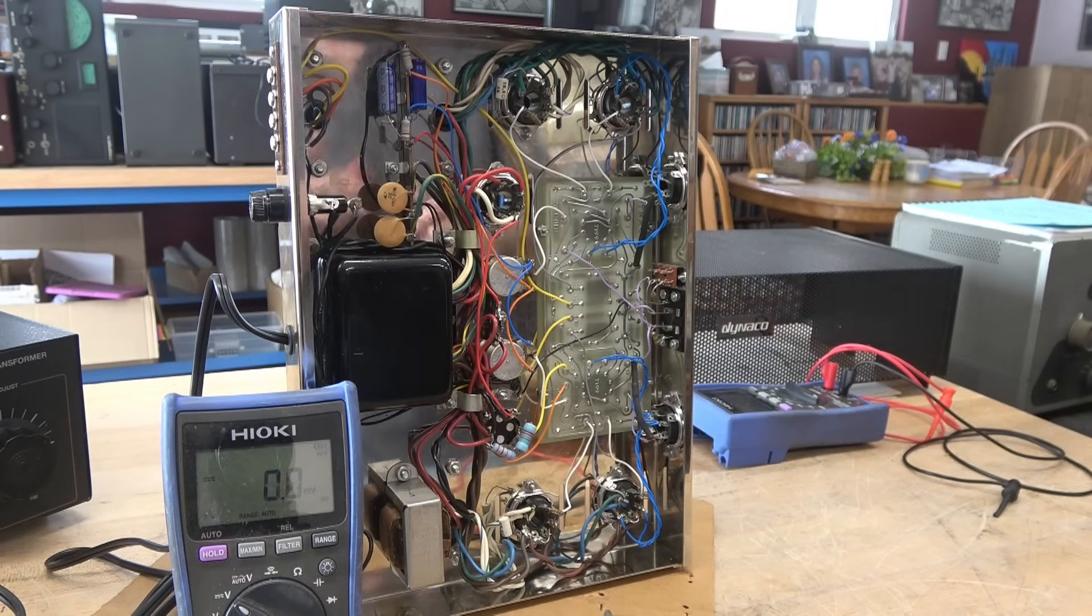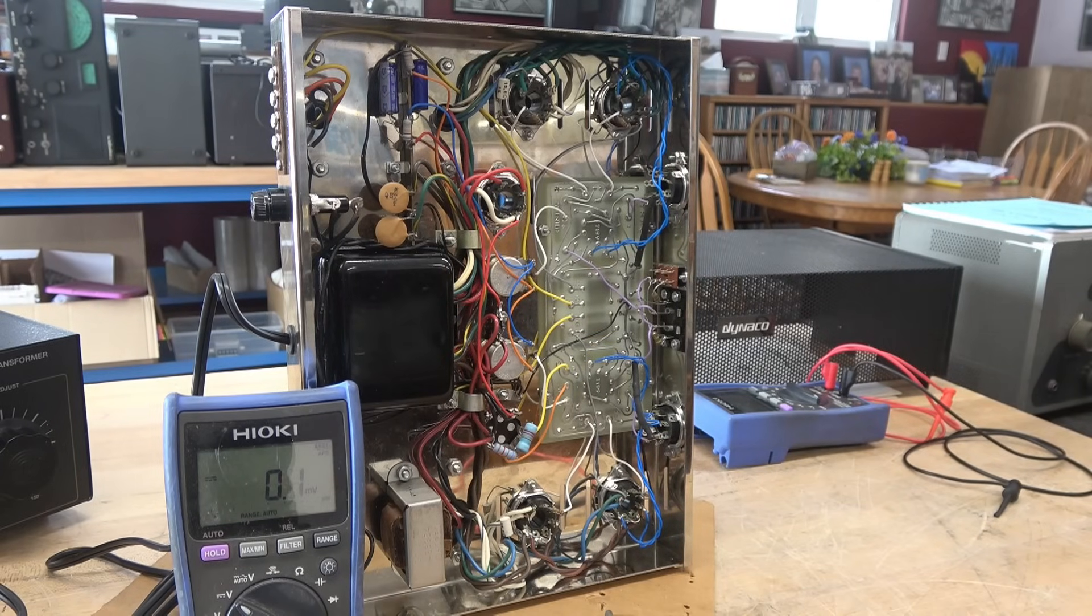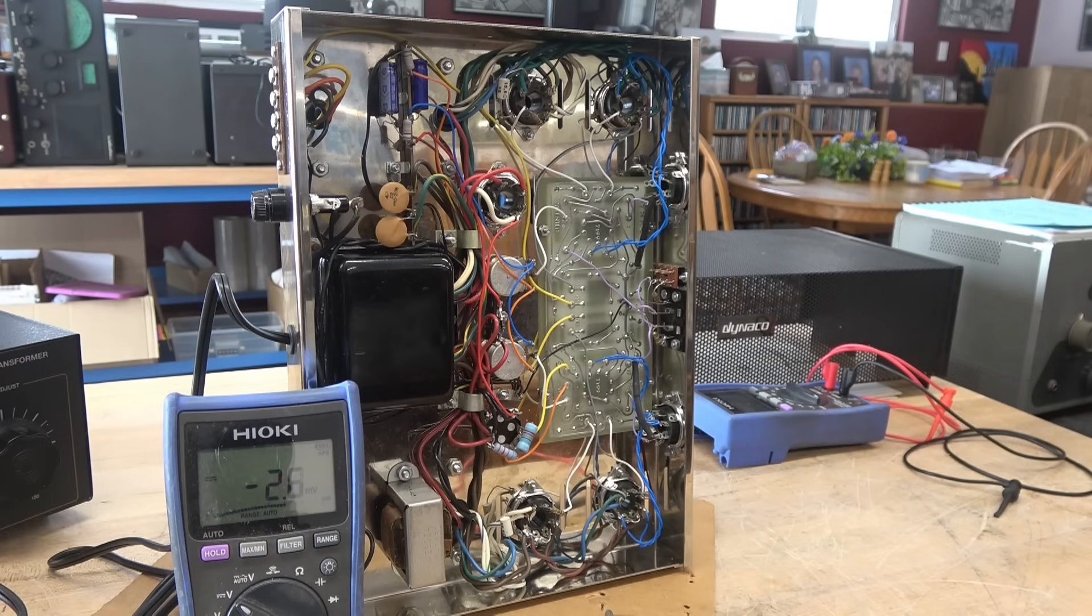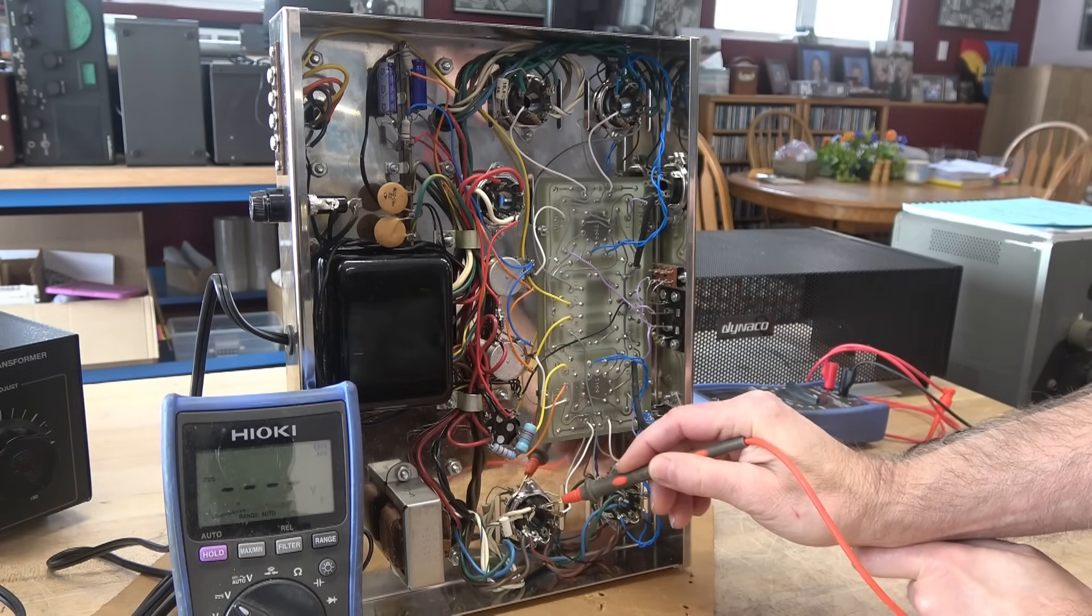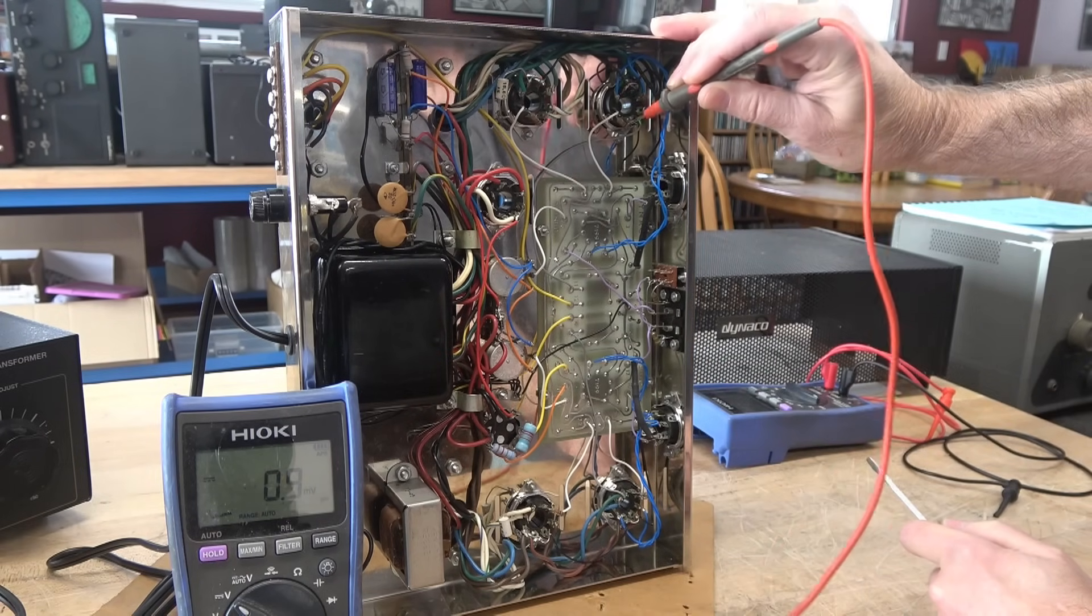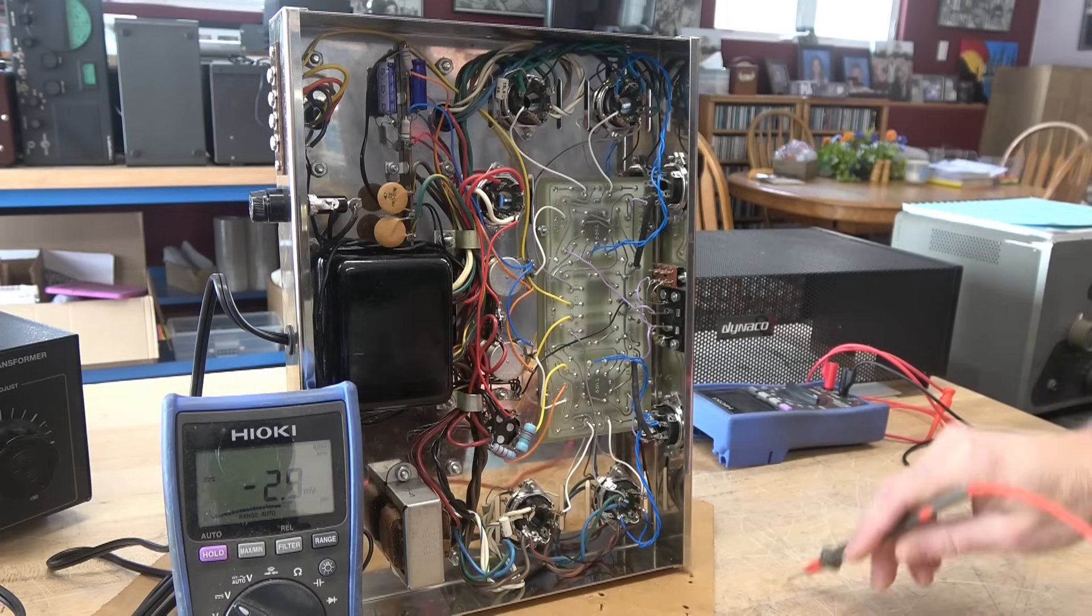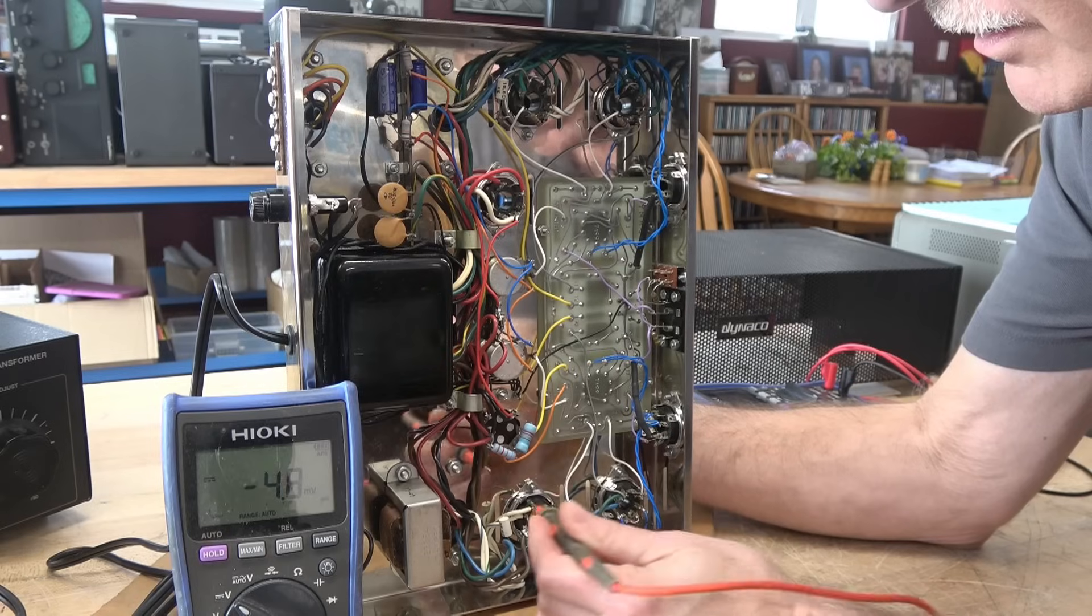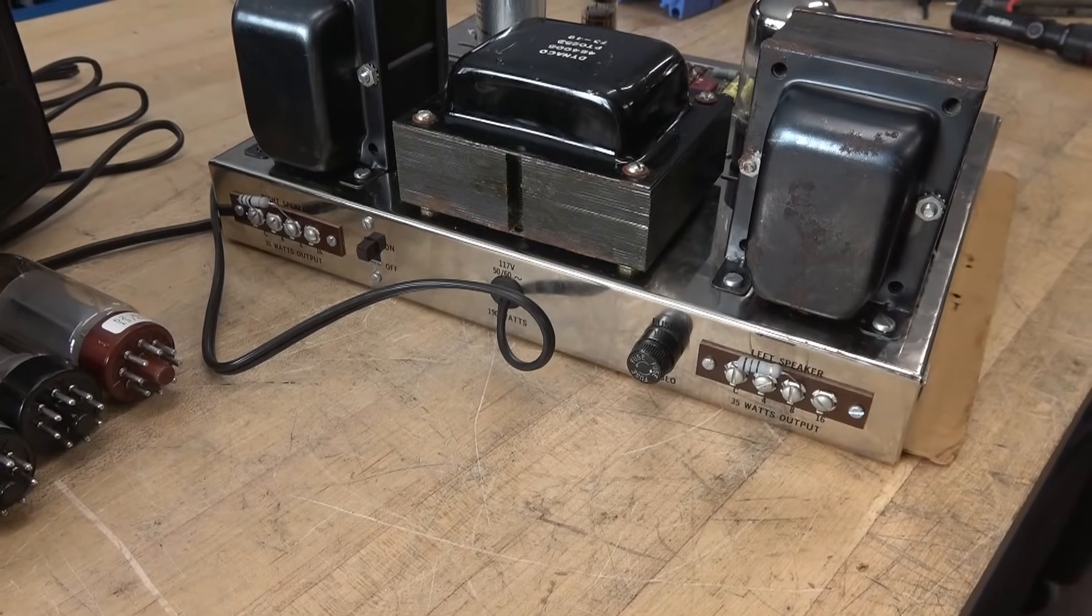So before I install tubes, we're going to ensure that the negative bias is present on all the grids of the output tube. So I have a variac, and we're going to bring her up to about 50 volts for this test. And now I'll take my meter and check pin five of each of the output tubes to make sure the negative bias is there, because if it's not, the tube will red plate. The other thing I'm going to do is make sure that my negative bias pots are delivering maximum negative bias.